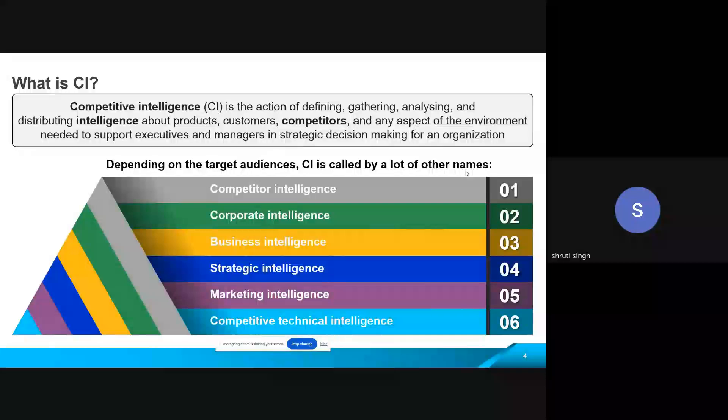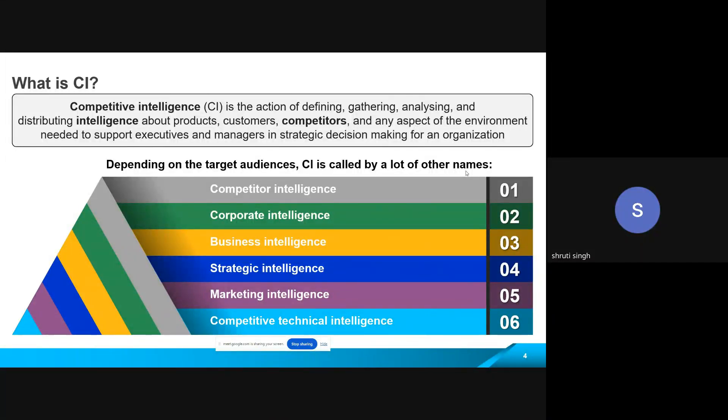Okay, so moving into the theory part. So what basically is competitive intelligence? It is the action of defining, gathering, analyzing, and distributing intelligence. Now you define the data or you define the business question, you gather the data around it, you analyze the data, and you distribute a well-versed report which is called intelligence. Now what, for which kind of assets can you do this activity? It can be product-oriented, it can be customer-oriented, it can be competitor-oriented. Okay, if you do any of these activities for either of these assets.